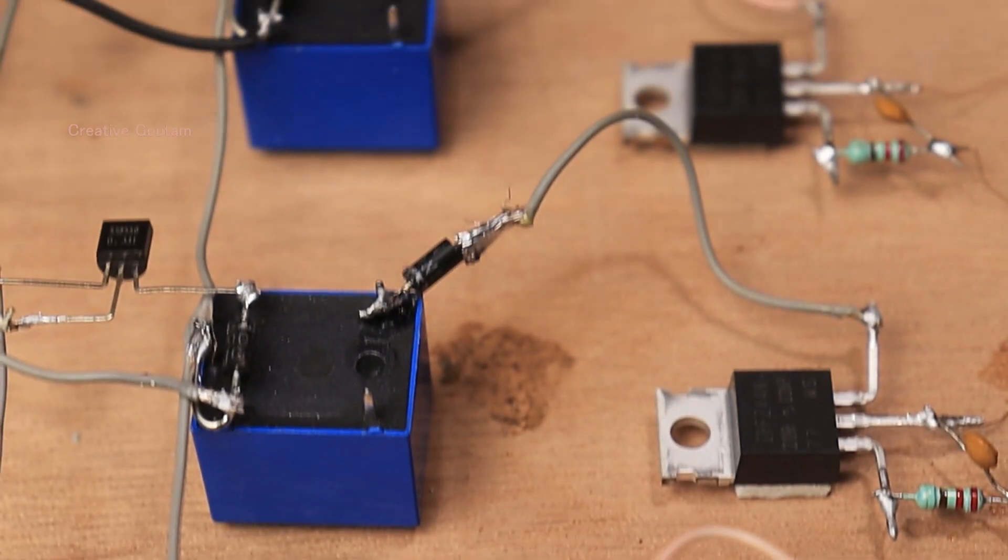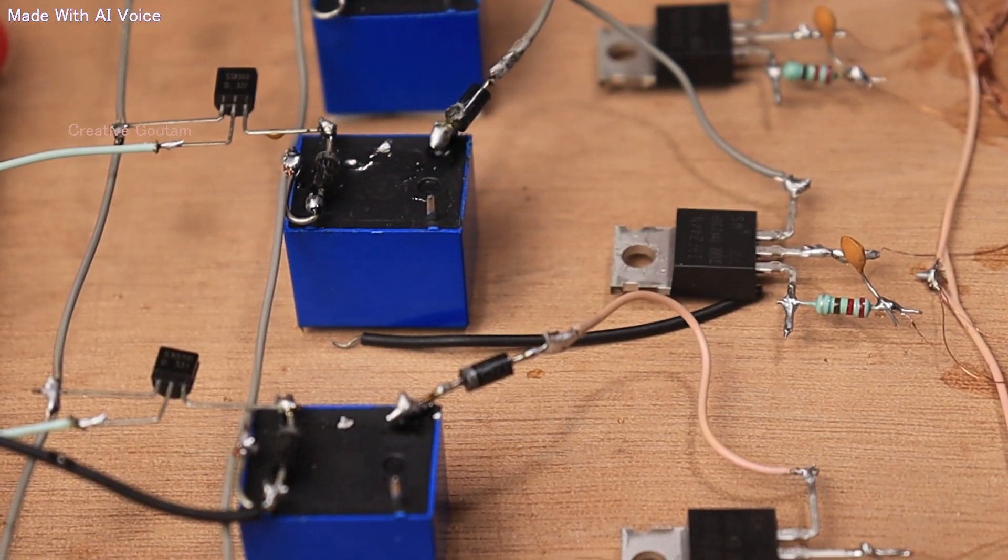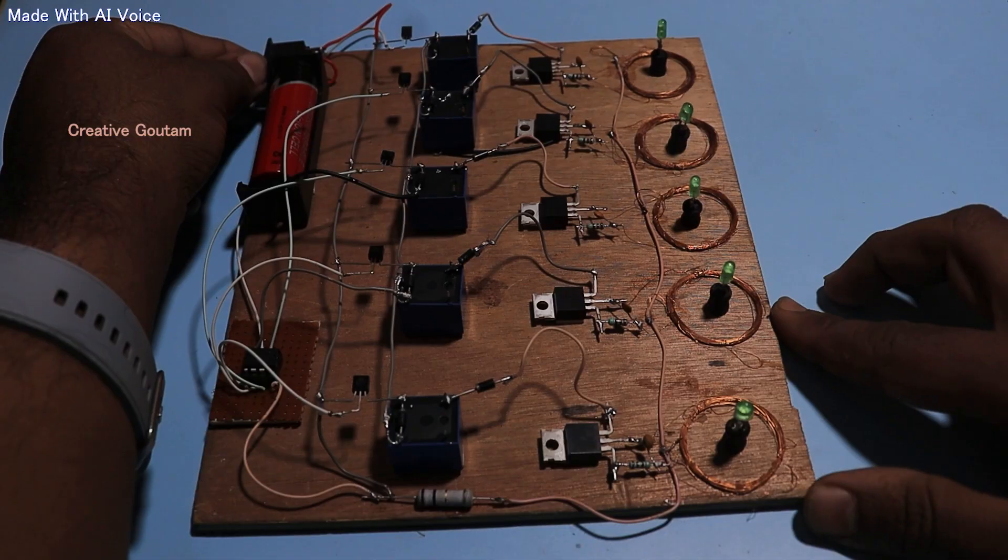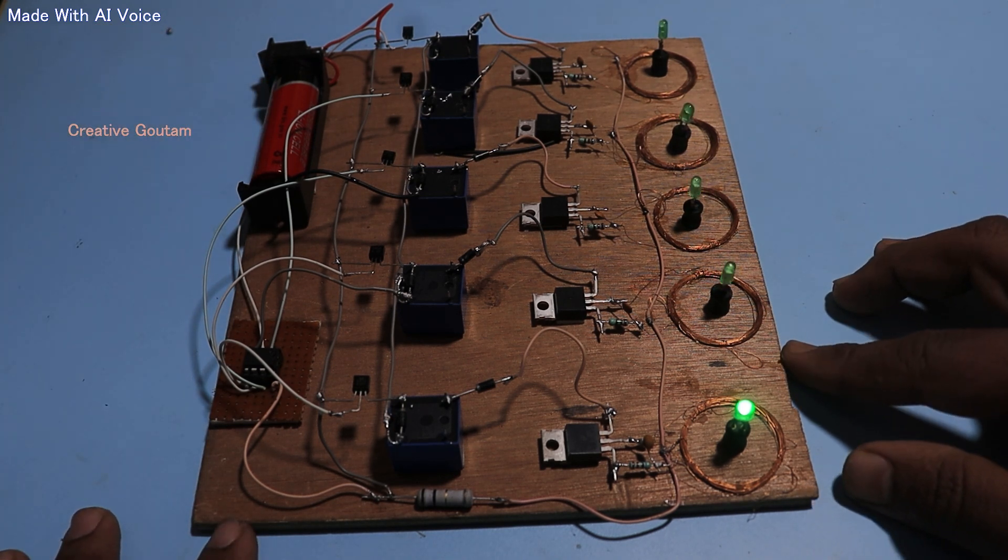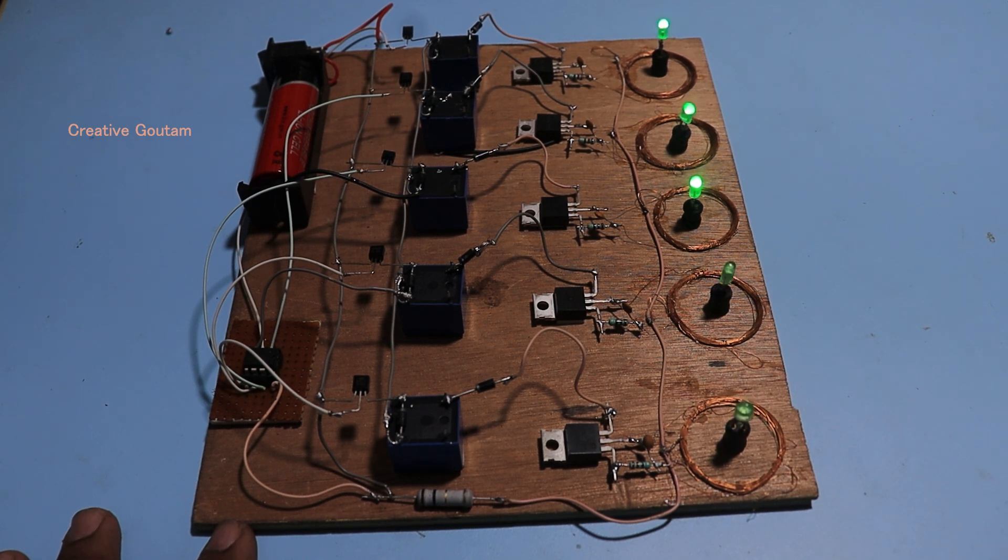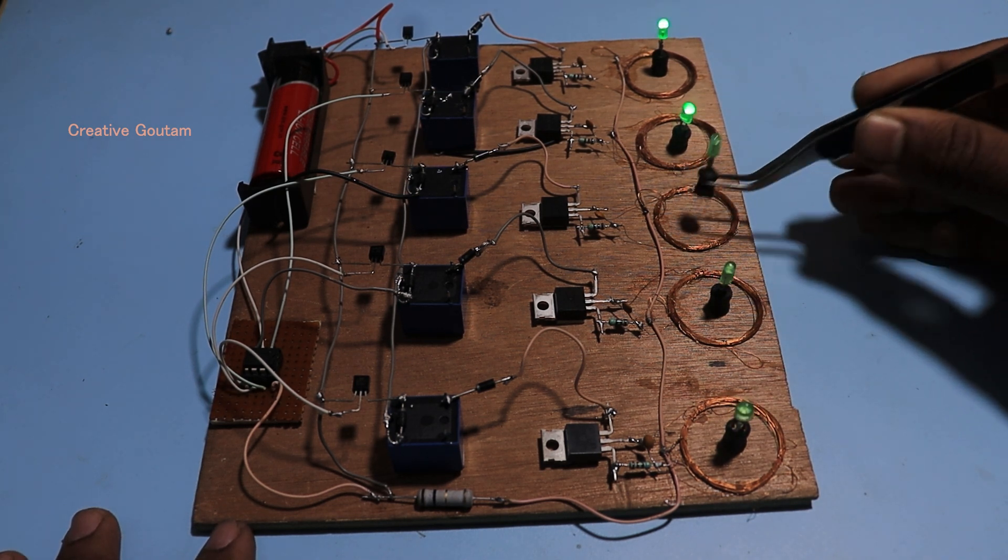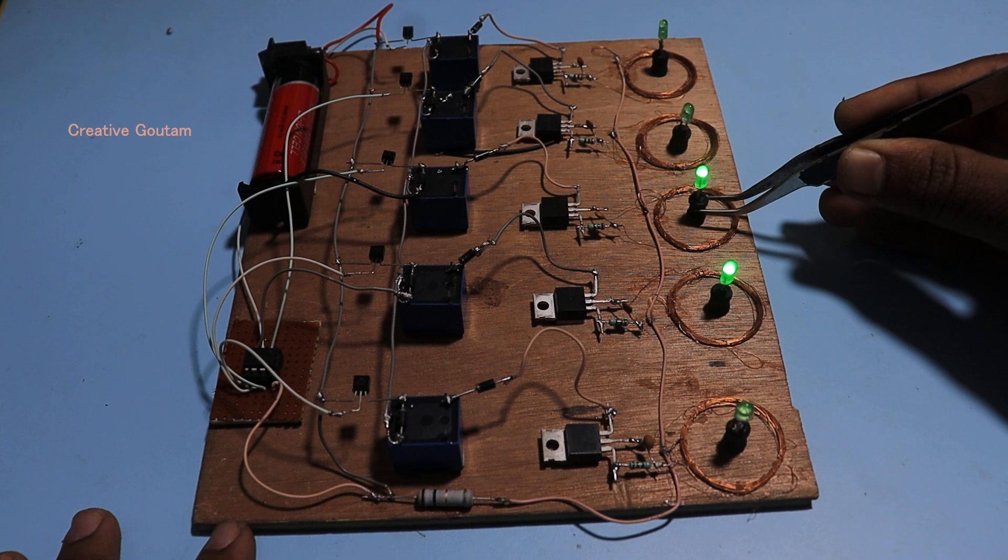So I added 4007 diode between relay NO pin and MOSFET source pin. Now the circuit is working better than previous. Even it is not working properly. Next time I will bring better version of this circuit for you.